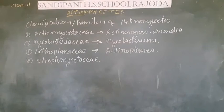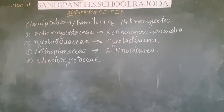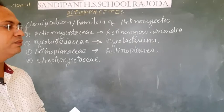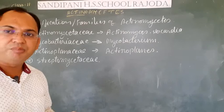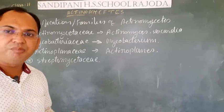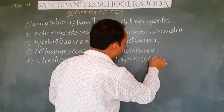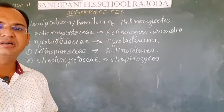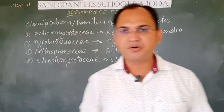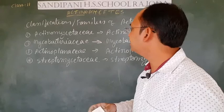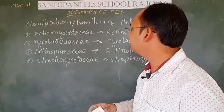The fourth family, Streptomycetaceae: members of this family are also filamentous and branched, and their aerial part bears spores. The example of this family is Streptomyces. So these are the four families of the group Actinomycetes: Actinomycetaceae, Mycobacteriaceae, Actinoplanaceae, and Streptomycetaceae.